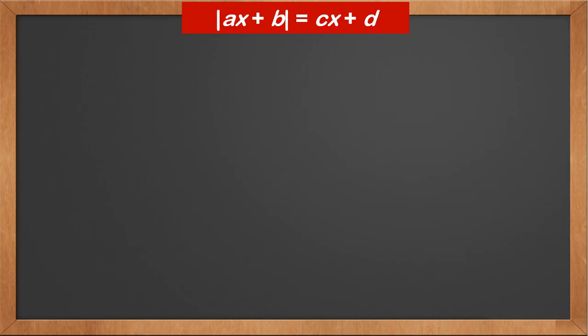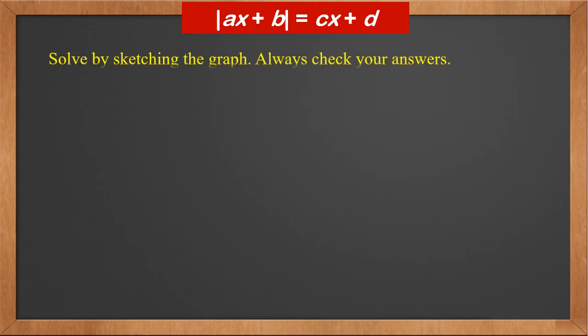The second type is the modulus of ax plus b equals cx plus d, where one side has a modulus and the other side doesn't. For this type of equation, we solve by sketching the graph, and remember to always check your answers.